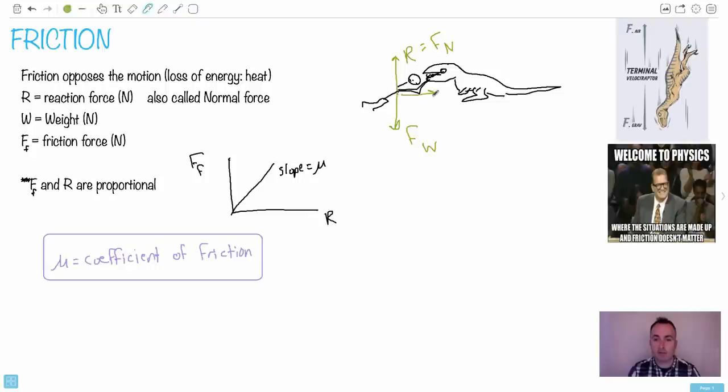But I would also be feeling some sort of force applied here by this dinosaur. And I would also have some sort of force of friction. And if these two forces, the force applied and the friction force are not equal, then I'm going to accelerate. So then I'll start moving. So there's this whole idea about this friction force and what actually happens with it. So this R is the reaction force. It's measured in Newtons. It's also called the normal force. We have W is the weight. That's also in Newtons. We have the friction force, which is in Newtons.